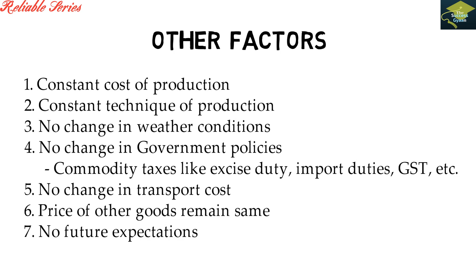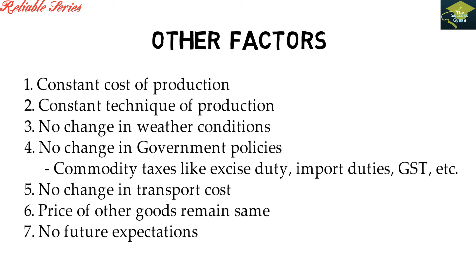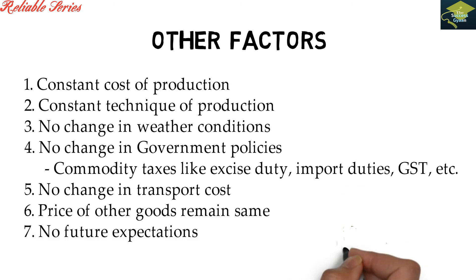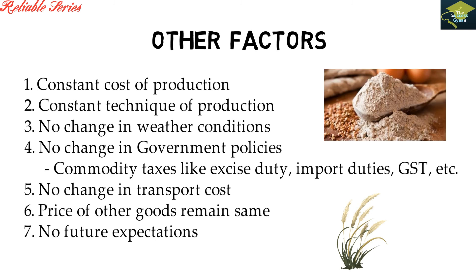Law of supply की यह assumption होती है कि ये other factors constant रहेंगे — तभी law of supply काम करेगा. यानी जब cost of production constant रहेगी, seller को production cost affect नहीं करेगी, कोई नई technique नहीं आएगी, supply chain को weather condition break नहीं करेगी, कोई नया government tax introduce नहीं होगा, transport cost में change नहीं होगा, other goods के prices constant रहेंगे, और seller की future expectations stable रहेंगी. For example, wheat एक necessity है — उसका price बढ़ने पर भी लोग consumption बंद नहीं करेंगे. अगर market में कोई better alternative जैसे multi-grain flour same price में आ जाए, तब wheat flour की supply chain में break आएगा. अगर इन में से कोई भी condition change हुई, तो law of supply काम नहीं करेगा.